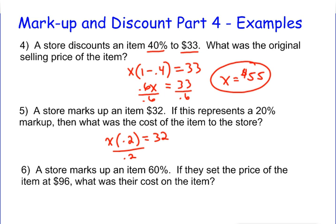If you divide both sides by 0.2, again, on your calculator, 32 divided by 0.2 is $160. So the cost to the store was $160. If you wanted to know the selling price, it would be $160 plus 32, which would be $192.